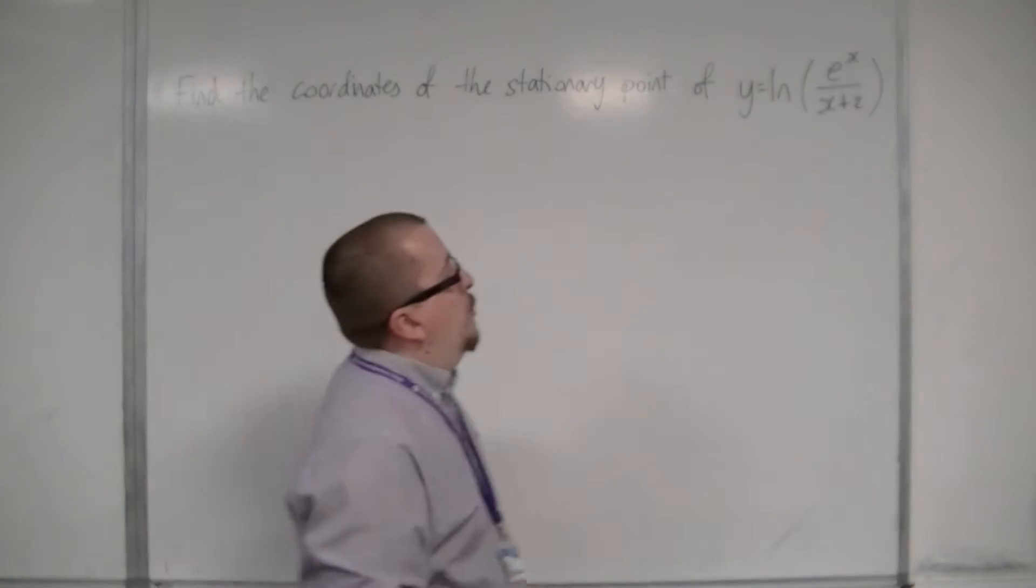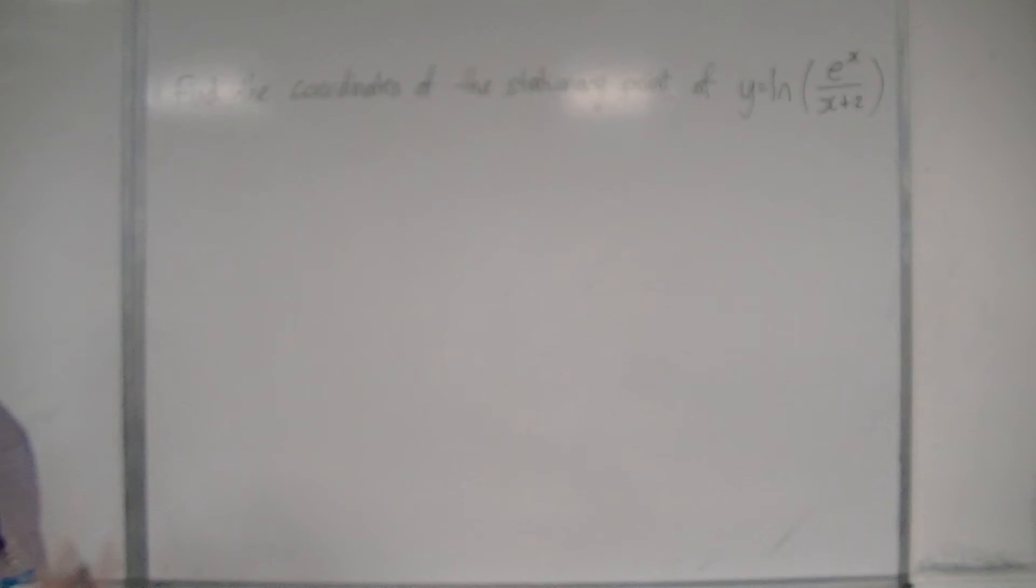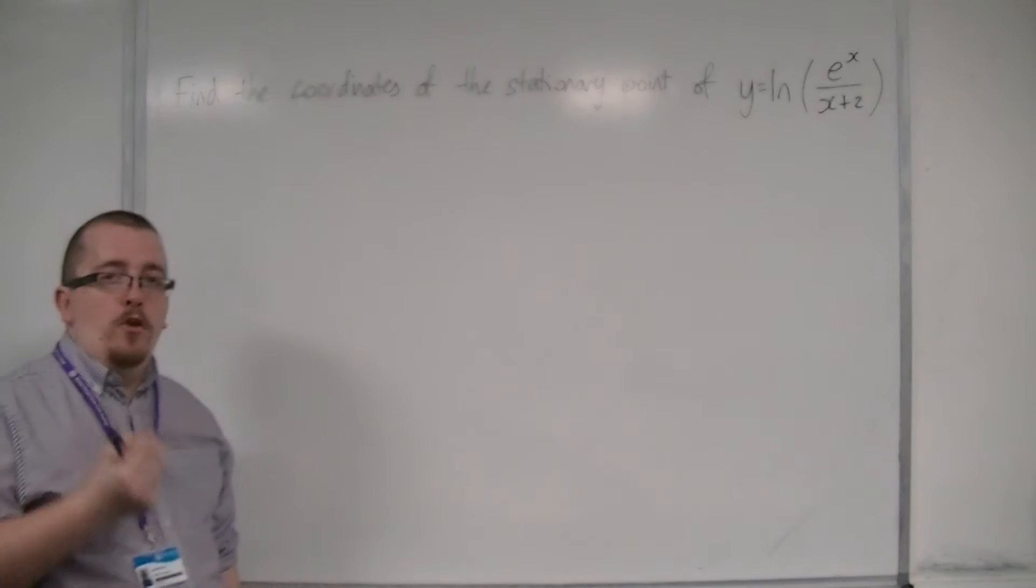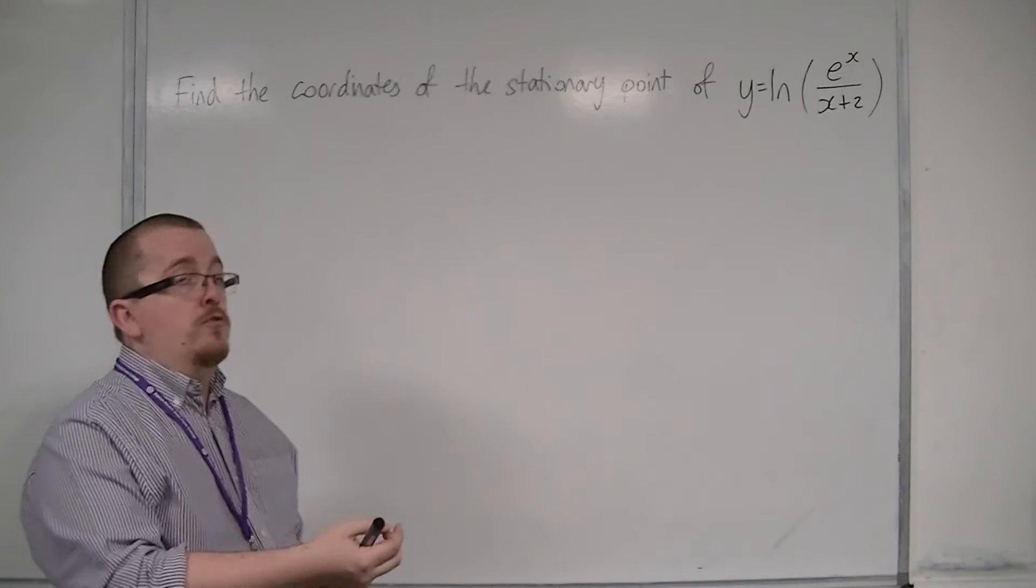Now, in order to differentiate that, you've got really two methods. The first method is going to be absolutely horrible and messy because it's going to incorporate using the chain rule and the quotient rule and I probably wouldn't advise it.